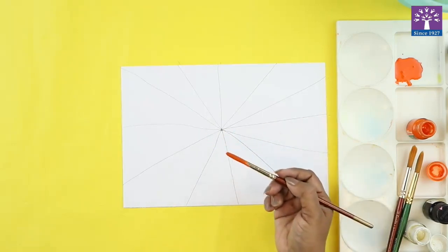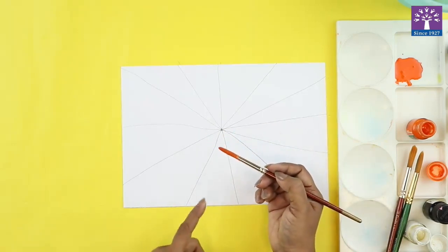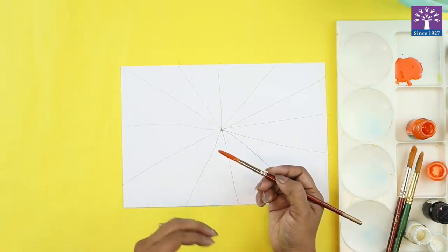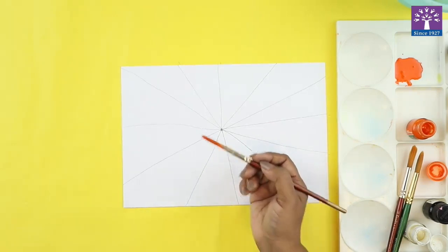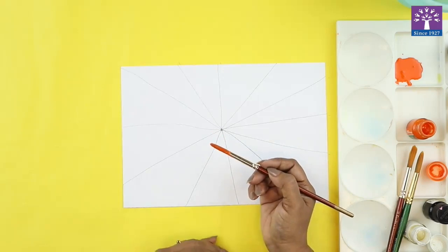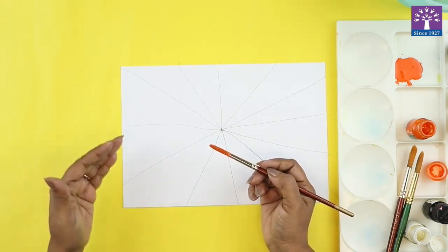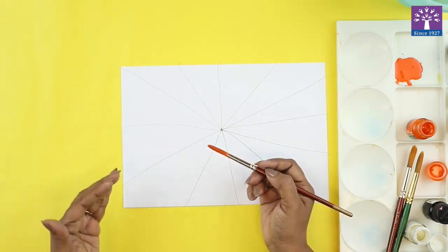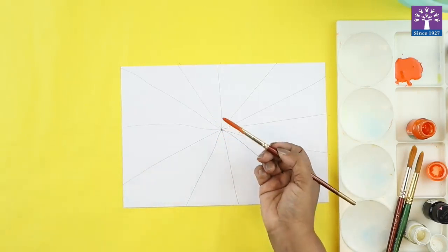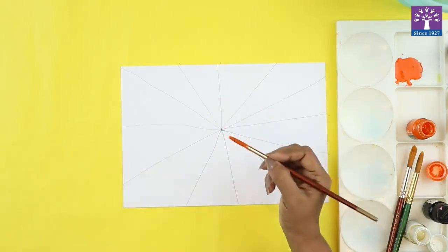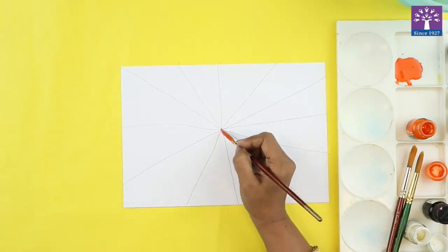Like suppose I'm taking orange color, then in monochromatic color what you will do is to create a tint, you will keep on adding white to this particular color to create the tint. And if you want to make a darker shade, you will keep on adding black to this orange color to create the shades of the orange color.